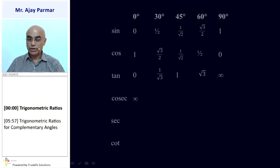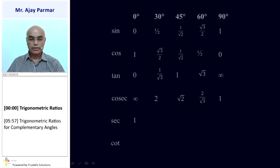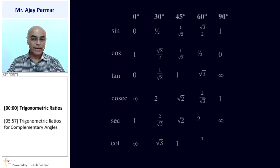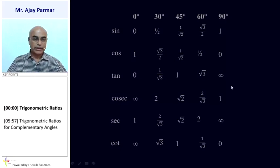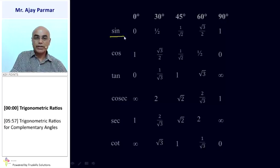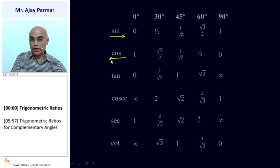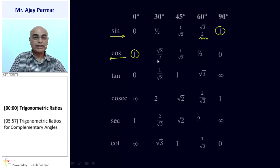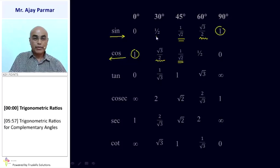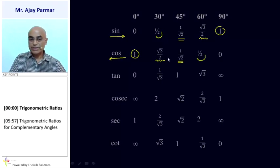Cosec is the inverse of sin: inverse of 0 does not exist; inverse of 1/2 is 2; inverse of 1/√2 is √2; inverse of √3/2 is 2/√3; inverse of 1 is 1. Sec is the inverse of cos — that is what you need to remember. One thing to understand is that sin values are written in one order, and cos values are written in exactly the opposite order. Sin 90° equals cos 0°, sin 60° equals cos 30°, sin 45° equals cos 45°, sin 30° equals cos 60°, and sin 0° equals cos 90°.